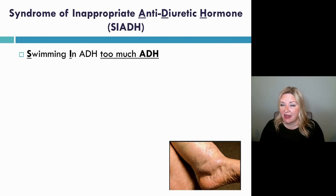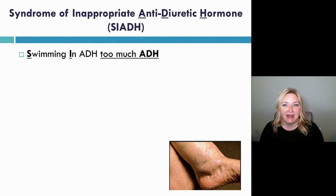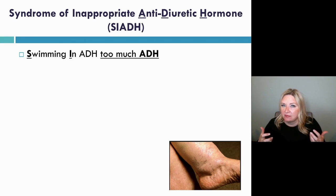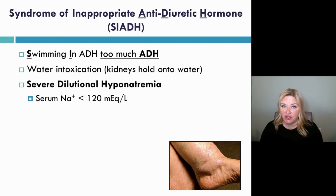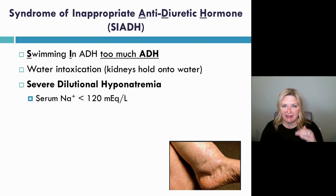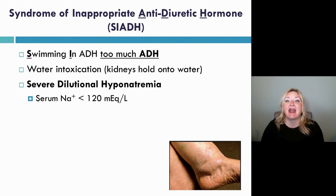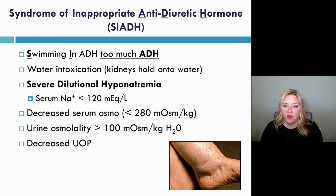If I've got too much antidiuretic hormone, what does the urine bag look like? It's empty. Patients are holding on to water. If I hold on to water, what does that do to my sodium? It dilutes it. So the other name you might hear this called is dilutional hyponatremia. And often you'll see sodiums less than 120 — that's not the cutoff for SIADH, but you'll often see very low sodiums because patients are holding on to water, which absolutely dilutes the sodium.